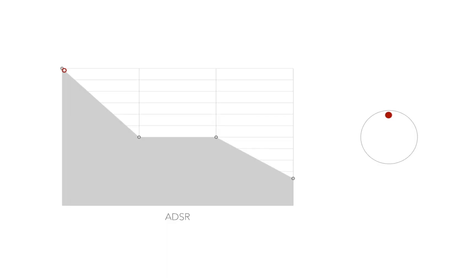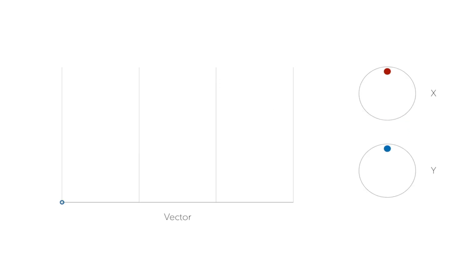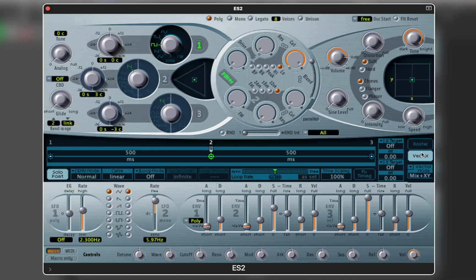Most of you are probably familiar with standard ADSR envelopes and how they can be used to modulate parameters. An LFO is simply another way to approach it and is usually used for synced effects. A vector is a different way of doing that — you can create multiple snapshots of parameters using an XY pad and then morph between them. At first it might be confusing because ES2 doesn't really give you visual feedback, but once you learn it, it's easy to set up any way you want.